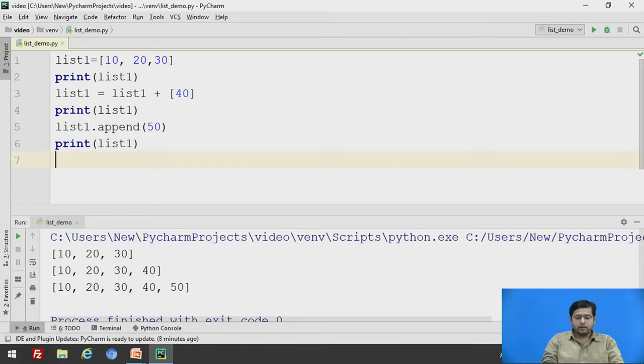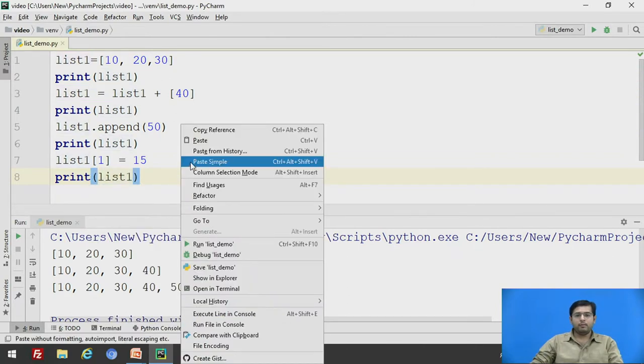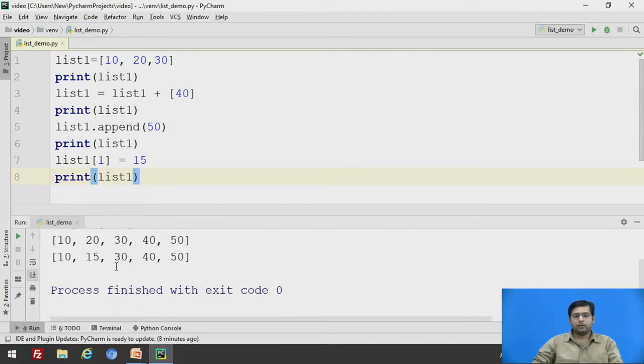The third type is, we will add the list using its index value. list1, we have to add at index number 1 is equal to, say, 15, and we will print this. Now, 15 will be added at the index location 1. See, this is the index location 1, this is 0, 1, 2, 3, and 4. These are the three ways you can update a list.